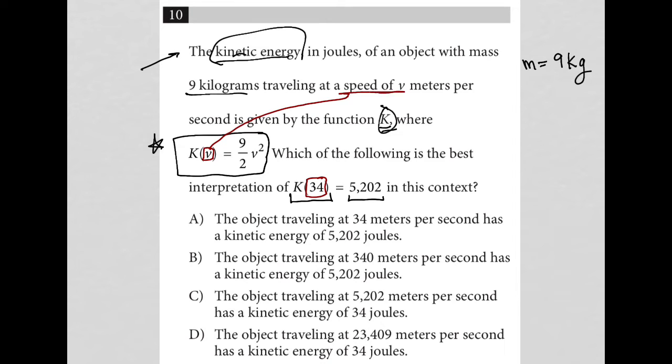Speed of V at meters per second. So in essence, what this K of 34 represents is the kinetic energy of an object, of object with mass equals 9 kilograms, traveling at 34 meters per second.